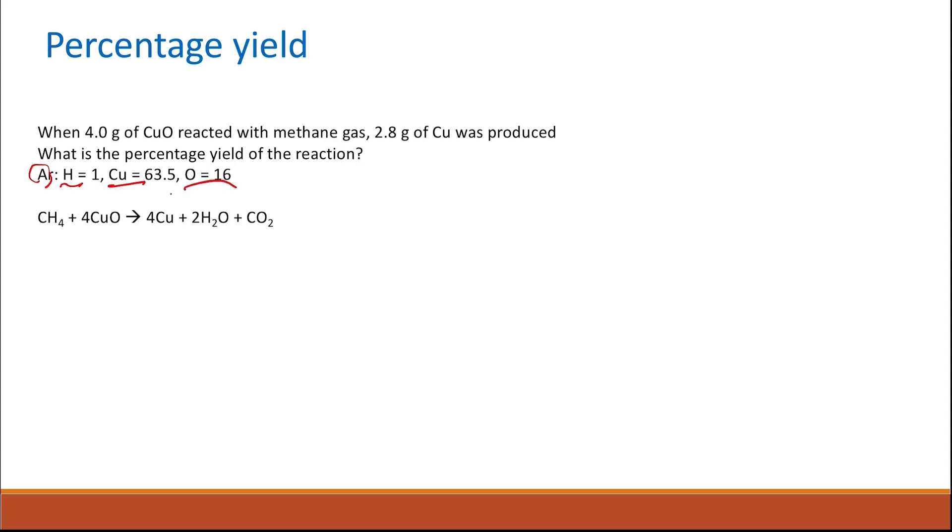So the first thing you need to do is to write the balanced equation in order to accurately calculate the expected amount of product that should be produced or the maximum expected product mass. So in this reaction, 1 mole of methane reacts with 4 moles of copper oxide to give you 4 moles of copper, 2 moles of water, 1 mole of carbon dioxide.